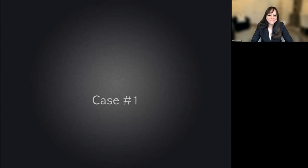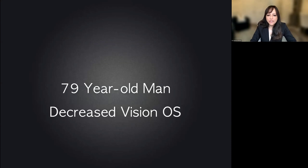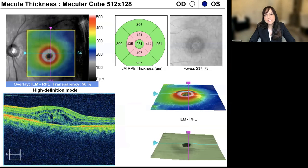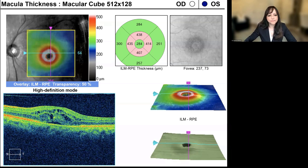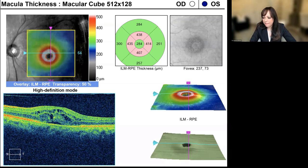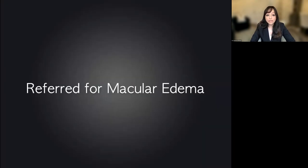Case number one: a 79-year-old man with decreased vision in the left eye. This is the OCT as presented in the clinic. Audience responses included macular edema, cystoid macular edema, choroidal neovascular membrane, and macular degeneration. This patient was actually referred for macular edema in the left eye.